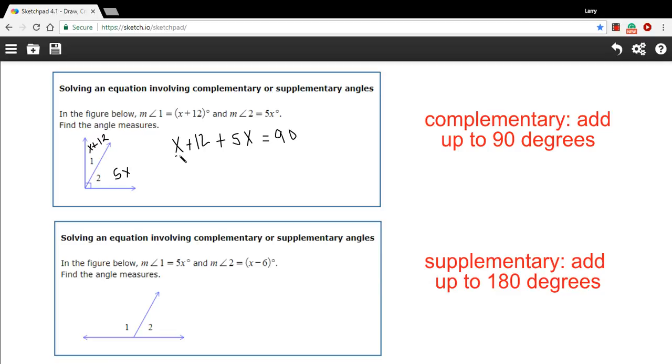Let me do that by combining the x terms first. So x plus 5x, that's 6x plus 12 equals 90. And then I'll have to subtract 12 from both sides. So that's 6x equals 78. And we'll have to divide by 6 to solve for x here. And 78 divided by 6, is that 13? Okay, so x equals 13.